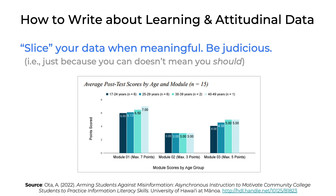Here's an interesting example where we're seeing the average post-test scores by age and module. The chart shows the module one results on the left, module two in the middle, and module three on the right. The slicing here is seen by the fact that the results are split by the age category of the participants. This is a concrete example of slicing learning data by module and age, a demographic variable.